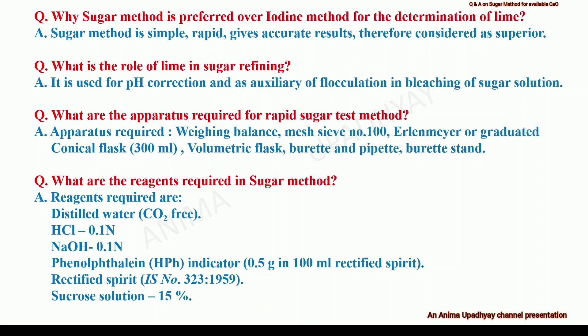What is flocculation? Flocculation means coagulation. What are the apparatus required for the rapid sugar test method? The apparatus required is simple and easily available. It includes a weighing balance, mesh sieve number 100, Erlenmeyer or graduated conical flask, volumetric flask, burette, pipette, and burette stand.